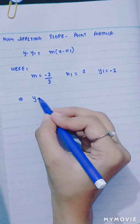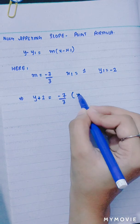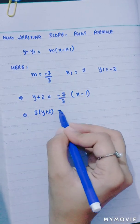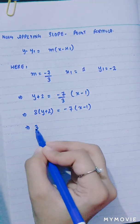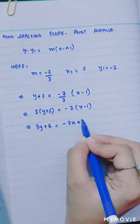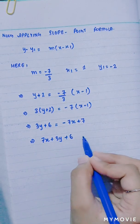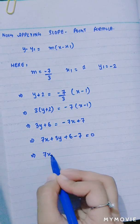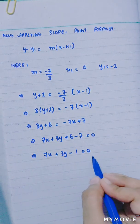y minus minus 2 becomes y plus 2, which is equal to minus 7 over 3 into x minus 1. Multiplying through: 3 into y plus 2 is equal to minus 7 into x minus 1. Expanding: 3y plus 6 is equal to minus 7x plus 7. Rearranging: 7x plus 3y plus 6 minus 7 equals 0, giving 7x plus 3y minus 1 equals 0.